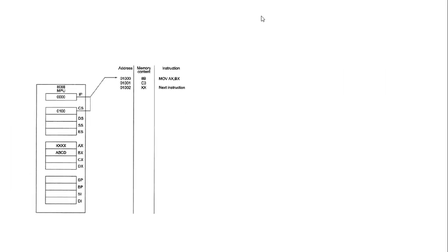Now let's consider the same kind of example from the software point of view. Given the IP and CS values, the physical address of the next instruction is 01000h. The instruction is MOV AX, BX, which means the BX value will be moved into the AX register — this is register operand addressing mode. In binary or machine code it equals 8BC3h. This instruction takes two bytes: one stored at 01000h and another at 01001h.